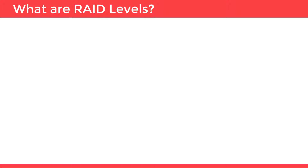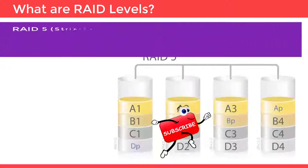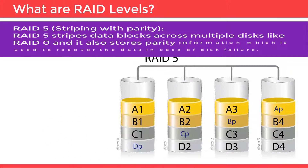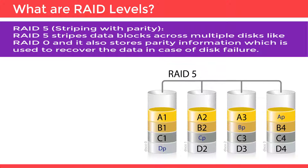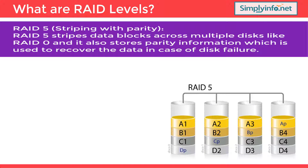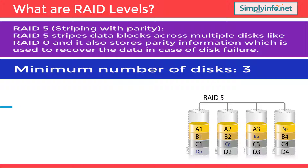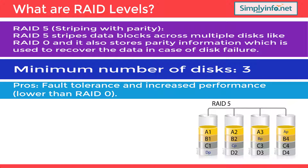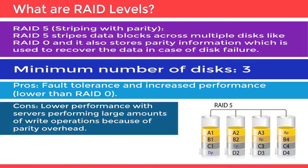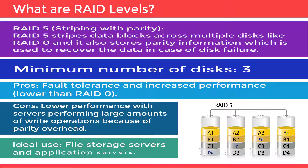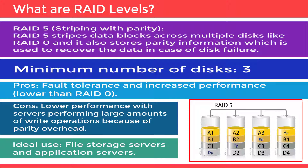RAID 5, Striping with Parity: RAID 5 stripes data blocks across multiple disks like RAID 0, and it also stores parity information which is used to recover data in case of disk failure. Minimum number of disks required is three. Pros: fault tolerance and increased performance, though lower than RAID 0. Cons: lower performance with servers performing large amounts of RAID operations because of parity overhead. Ideal use: file storage servers and application servers. An image below shows how RAID 5 is configured.